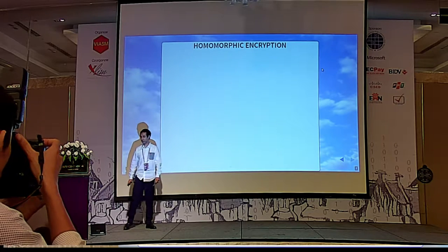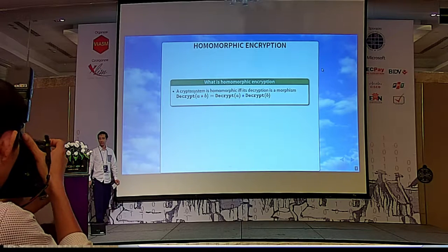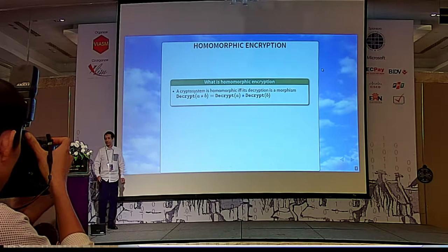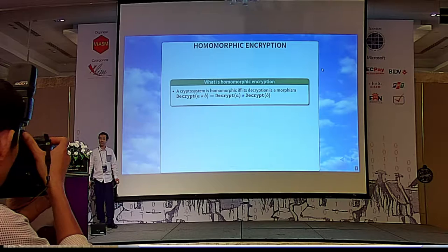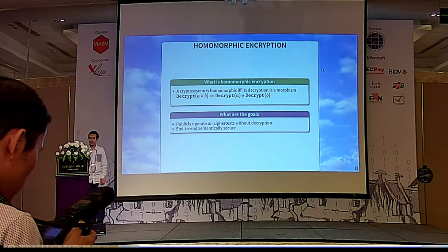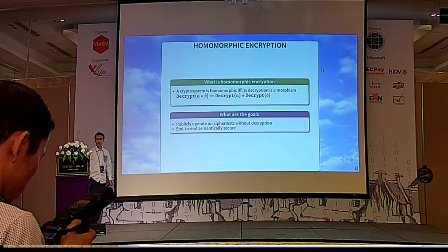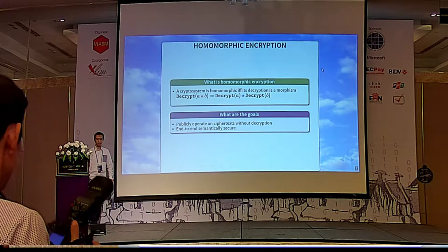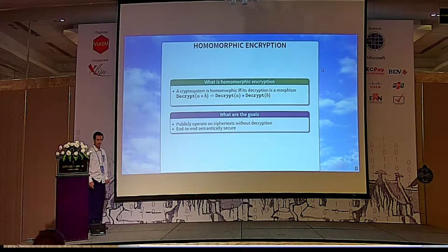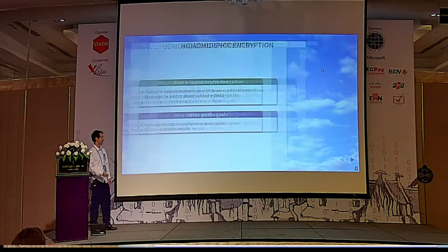This talk is about homomorphic encryption. What is homomorphic encryption? The straightforward definition is that it's a cryptosystem whose decryption is a morphism. The goals of homomorphic encryption are to publicly operate on ciphertext without decrypting them and being end-to-end semantically secure. You may view this as a group morphism, but of course the less structure there is, the more fun it is.